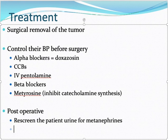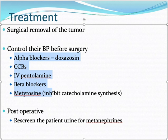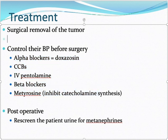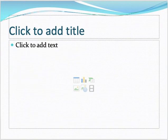In summary, pheochromocytoma presents with high blood pressure, so we give these drugs to control blood pressure and heart rate, and to inhibit catecholamine formation. The condition is straightforward to understand once you know the underlying physiology.